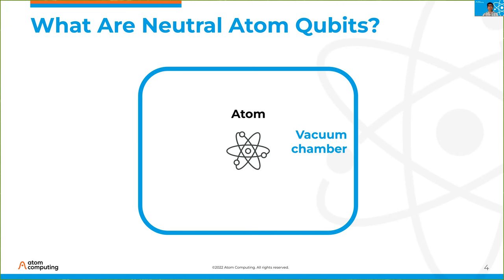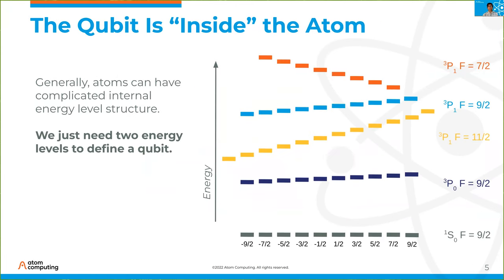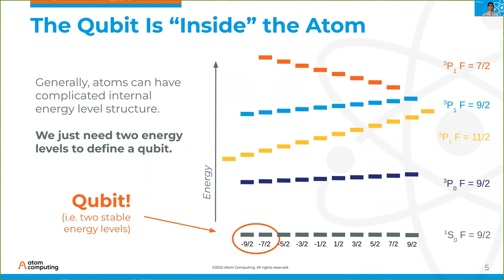Then I need to keep the atom fixed in space. For that, I introduce a focused laser beam such that the atom is pulled towards the intensity maximum. Now I have an atom that's protected from its environment and fixed in space. The qubit is actually inside the atom. If you look at our atoms — strontium 87 — we have a complicated energy level structure, but we really just want to pick two of the most stable levels: two of the nuclear spin ground states in strontium 87. These levels at the bottom define our qubit.